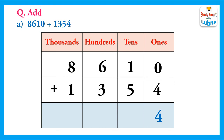Next step, we will add the tens. So, 1 plus 5 equal to 6. We write 6 in the tens column. Now, we will add the hundreds. 6 plus 3 equal to 9. We write 9 in the hundreds column. Now, we will add the thousands. 8 plus 1 equal to 9. We write 9 in the thousands column. So, the answer is 9964.